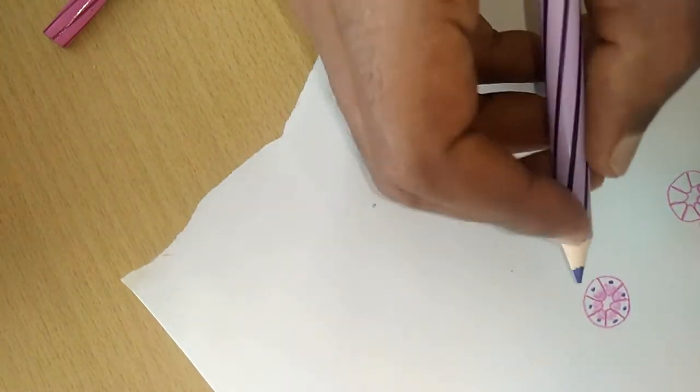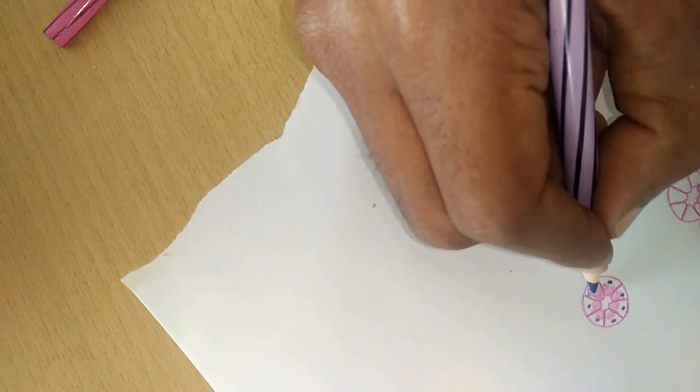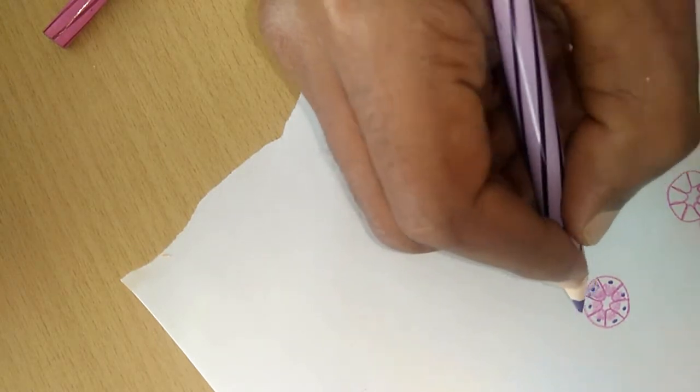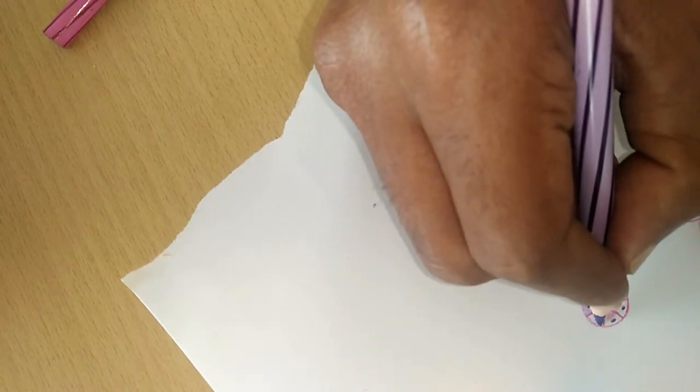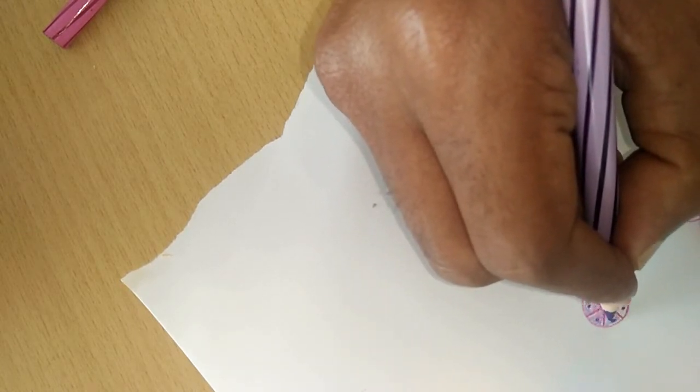And the basal region we have to shade with the hematoxylin pencil. Because on the basal level of each cell there are a lot of rough endoplasmic reticulum. That is why it is taking this hematoxylin stain.